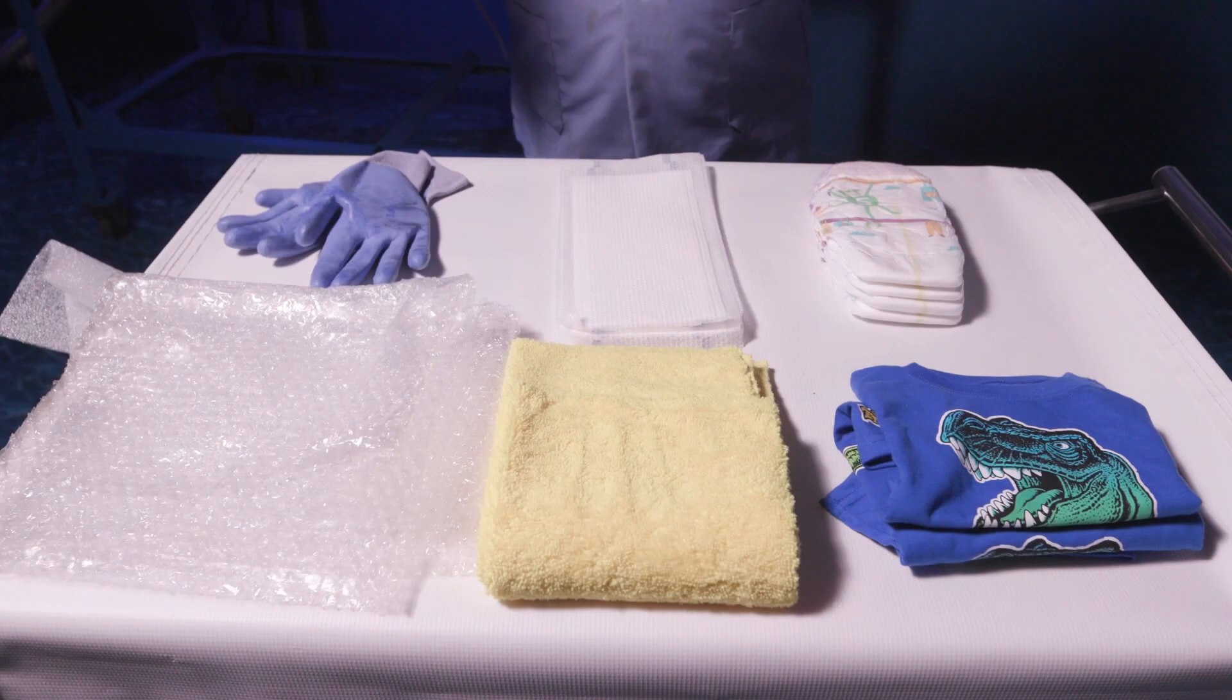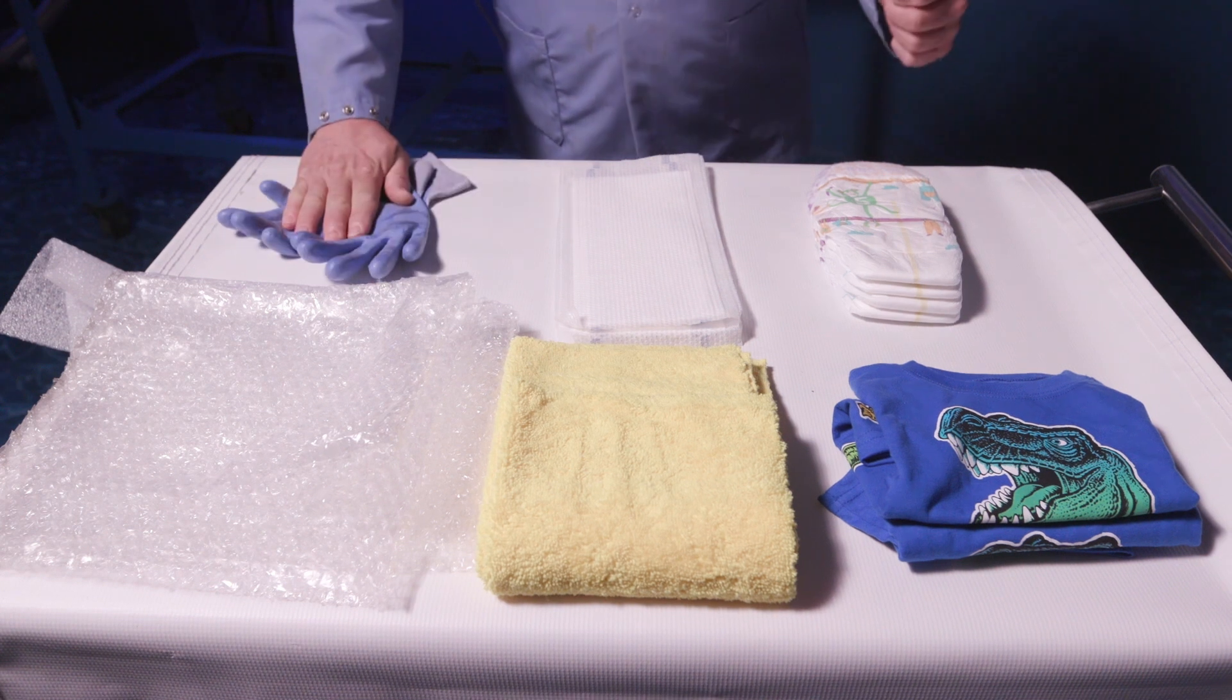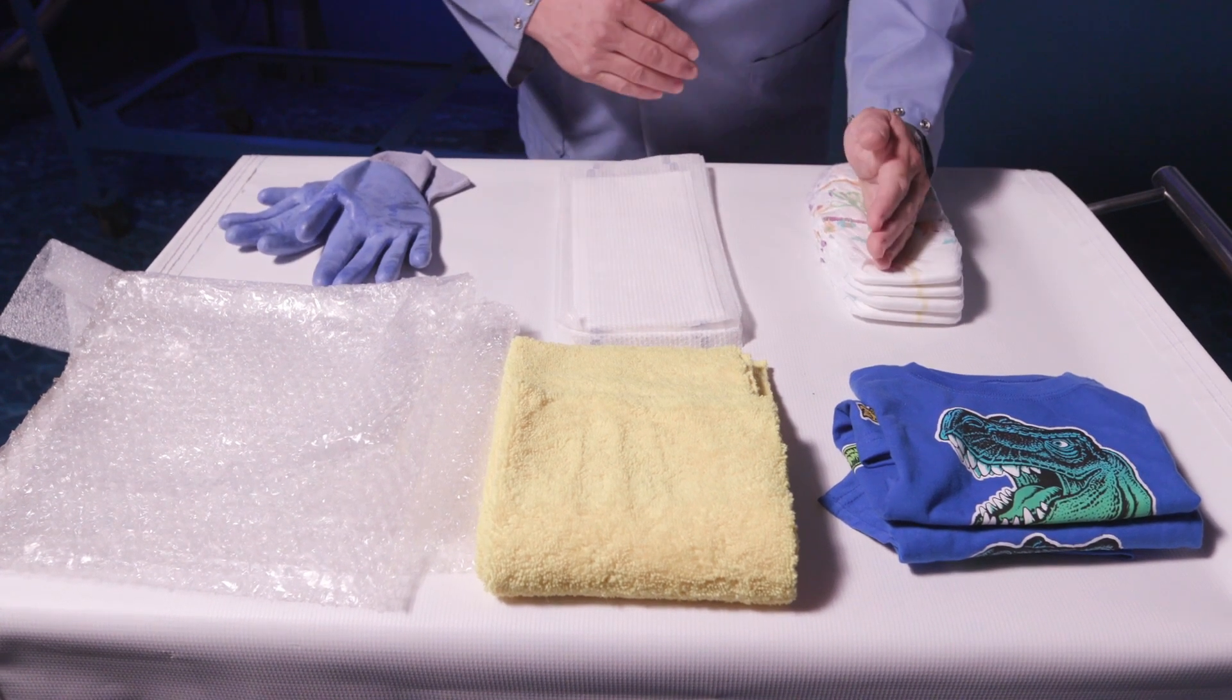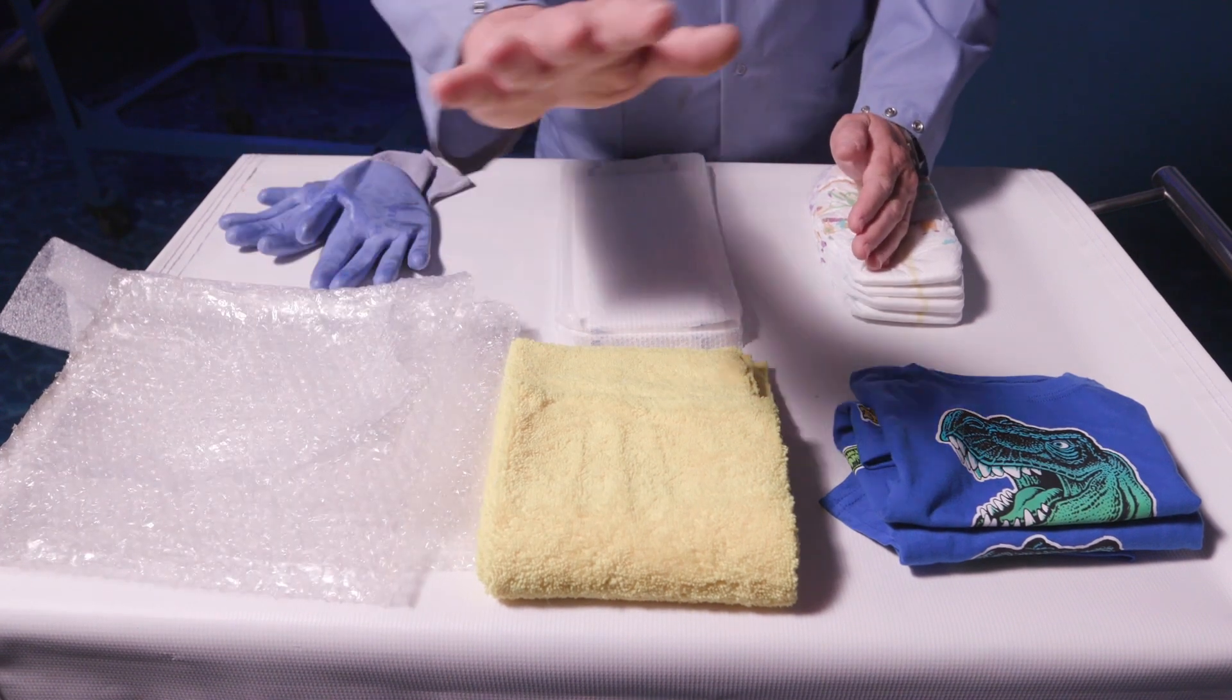We have a variety of household items here and we're going to show you how the AGS can handle it. So we have rubber gloves, we have cleaning wipes, we have baby diapers, we have plastic wrap, we have dish cloths, we have t-shirts and other clothing material.